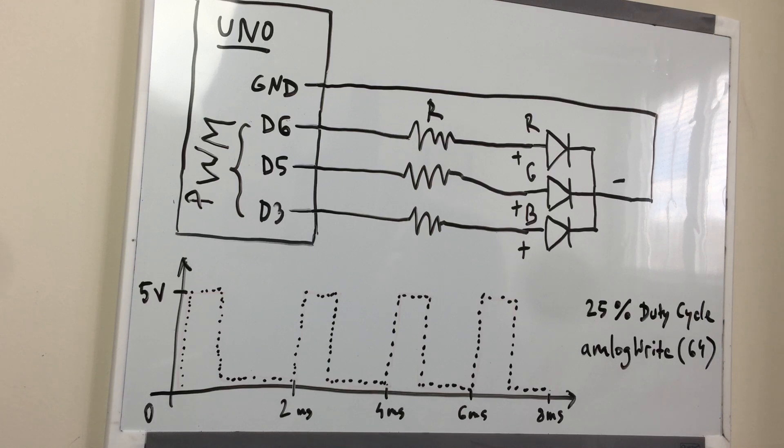The length of this pulse can be controlled by your programming, using the analog write function, which is on scale 0 to 255. In this example, analog write 64 requests a 25% duty cycle.